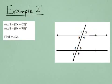Let's look at an example that requires a little bit of algebra. Here we're given that the measure of angle two is 2x plus 62 degrees, and the measure of angle eight is 8x plus 78 degrees. I need to set up an equation I can use to solve for x. In a type of problem like this, it can be helpful for you to ask yourself two questions.